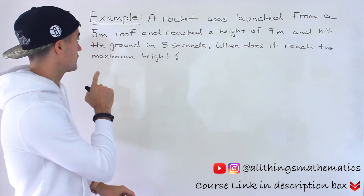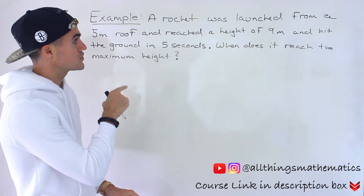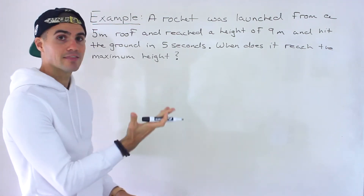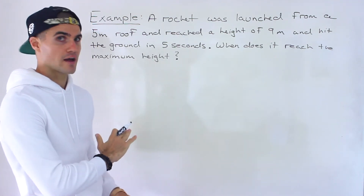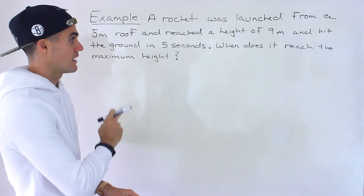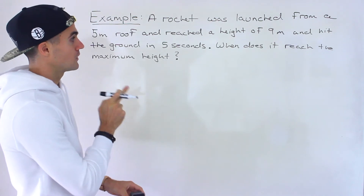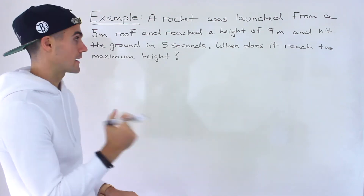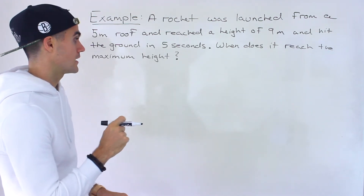A rocket was launched from a five-meter roof and reached a height of nine meters, and then it hit the ground in five seconds. They're asking: when does it reach the maximum height?